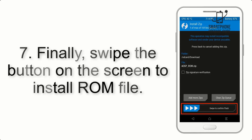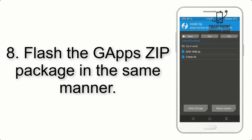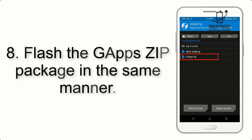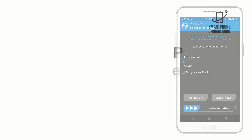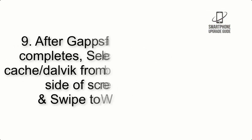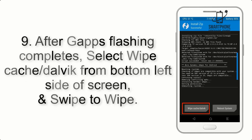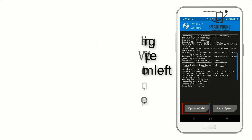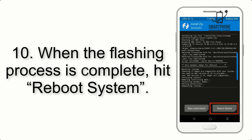Step 7: Swipe the button on the screen to install the ROM file. Step 8: Flash the GApps zip package in the same manner. Step 9: After GApps flashing completes, select Wipe Cache and Dalvik from the bottom left side of the screen and swipe to wipe.